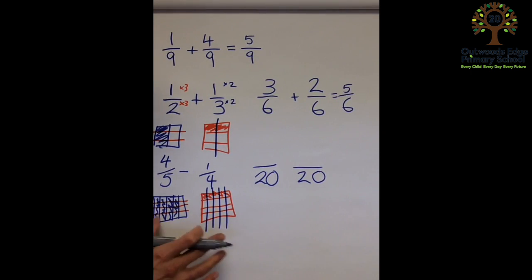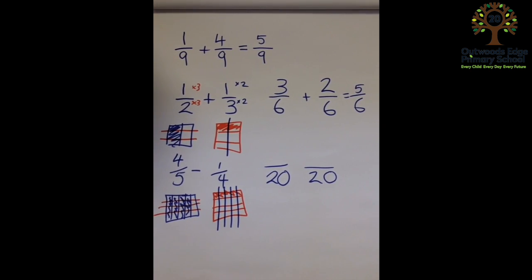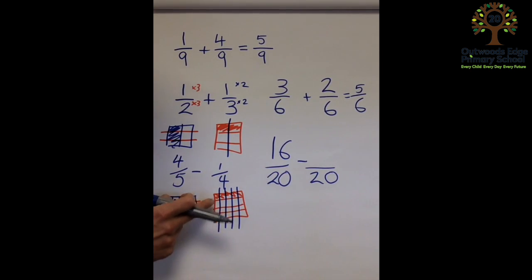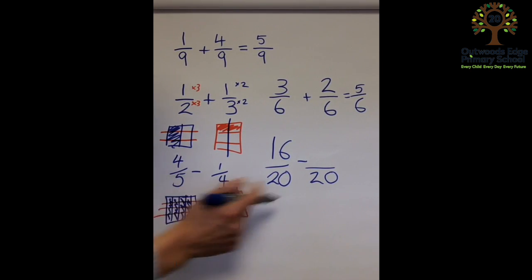Okay, the pictorial model shows me what number of the twentieths is shaded there. So on this side, I've got four, eight, twelve, sixteen. On this side, I've got one, two, three, four, five.